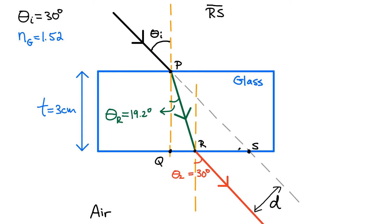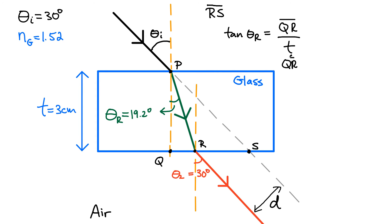It's not that straightforward to immediately write down an expression for RS. However, if I consider the triangle PQR, I can easily find the distance QR. Because you know the thickness of the glass is 3 centimeters. If you simply use the tangent with the refracted angle: tangent of 19.2 degrees equals the segment QR divided by the thickness. So the segment QR is simply the thickness — 3 centimeters — multiplied by tangent of theta R.